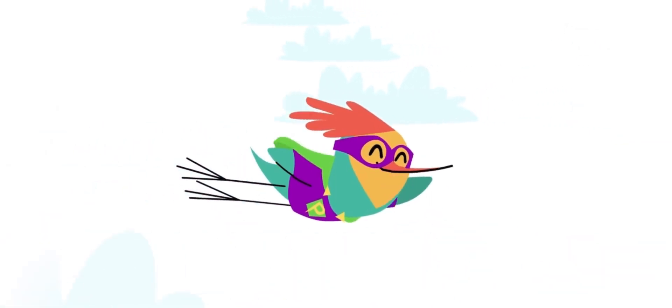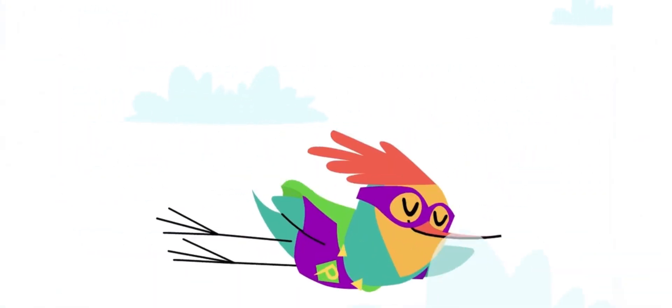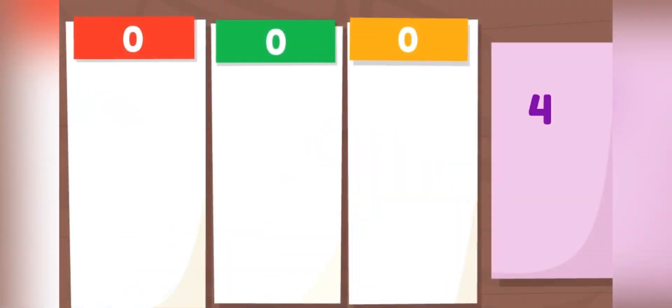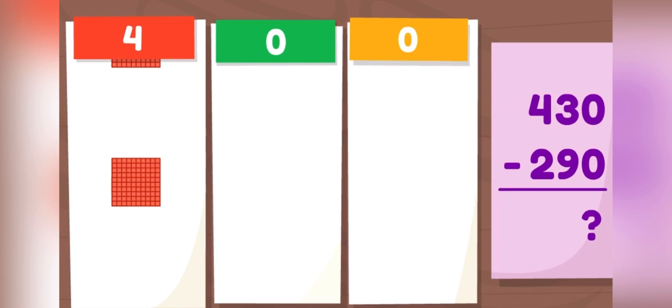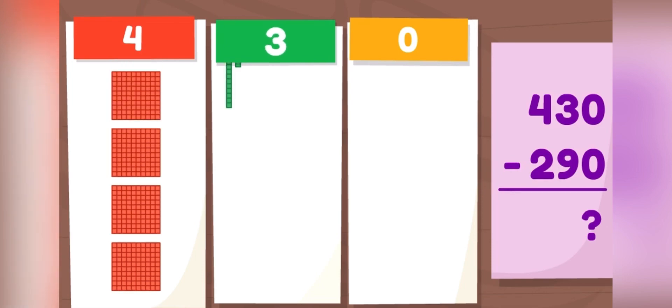I'm on a mission. Let's subtract some big numbers. What is 430 minus 290? We have 430, which is the same as four hundreds and three tens. Now we want to take away 290.